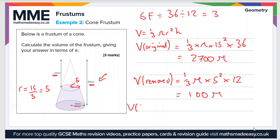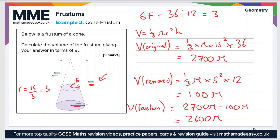The volume of the frustum is just the difference between the two volumes: 2700π minus 100π, which gives us 2600π. That's our final answer, because the question asks us to give the answer in terms of π.